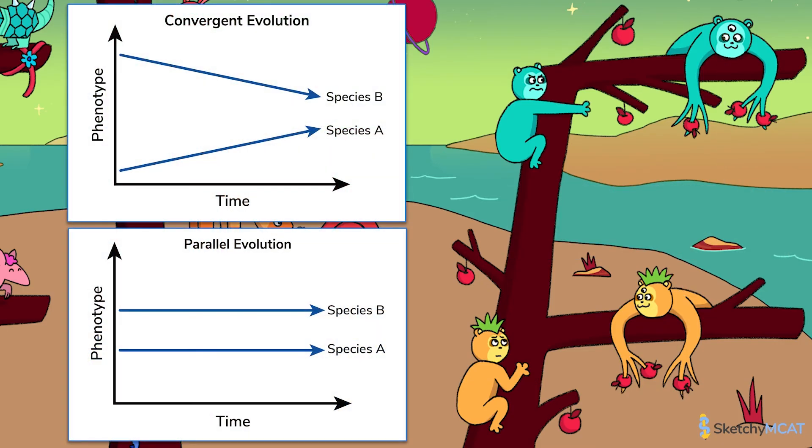It can be difficult to tell the difference between convergent evolution and parallel evolution. The key difference is that in convergent evolution, two species are distantly related, but their phenotypes become more similar over time as they face similar selection pressures. On the other hand, in parallel evolution, species are closely related to begin with and their phenotypes stay similar over time, even as they evolve in isolation from each other.